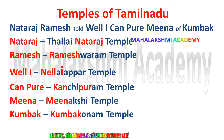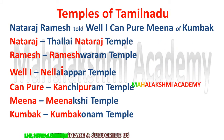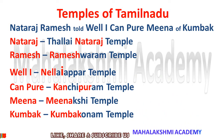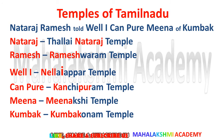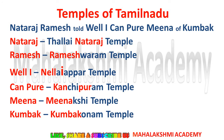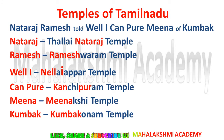Now let's speak about the temples of Tamil Nadu. The trick is 'Netraj Ramesh told well I can pure Meena of Kumbhak.' Netraj is for Talanetraj temple. Ramesh is for Rameshwaram temple. Well I is for Nelai temple. Can pure is for Kanchipuram temple. Meena is for Meenakshi temple. And Kumbhak is for Kumbakonam temple. This trick helps you learn the six temples situated in Tamil Nadu.